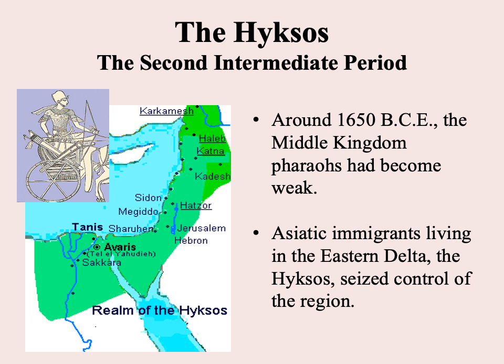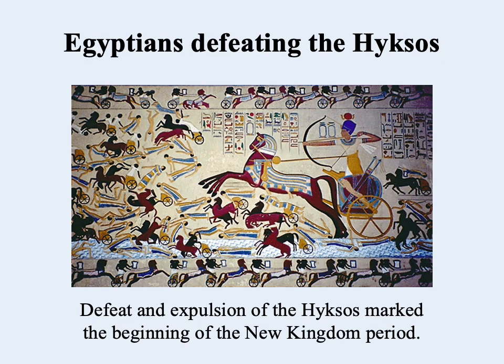The Bible is a historical document as well as a religious one, but it's an interested one — its primary concern is promoting a system of beliefs, not just providing an account of events. The Hyksos pretty quickly adopted Egyptian manner of government, clothing, and use of the Egyptian language, but were never really accepted by the native Egyptians, who eventually rose up against them and expelled them from Egypt. That marked the beginning of the New Kingdom.